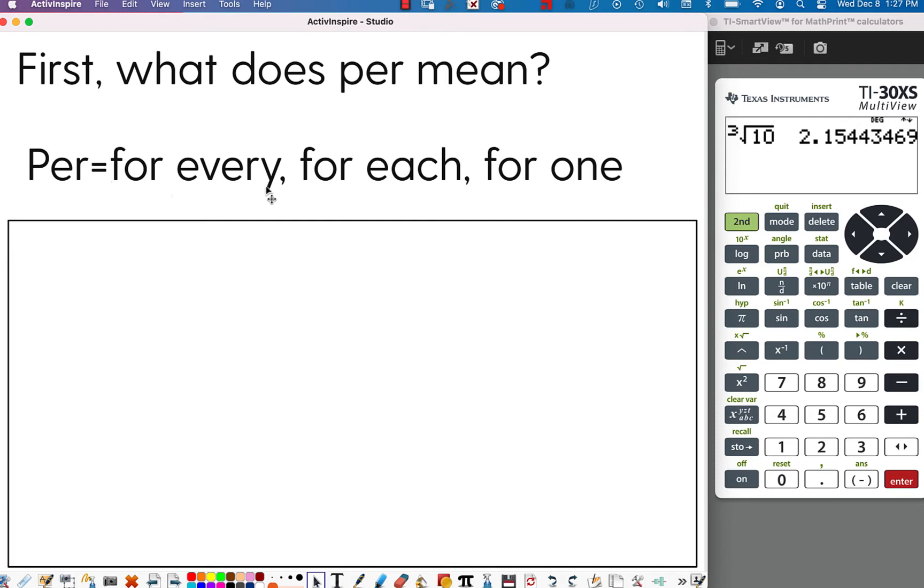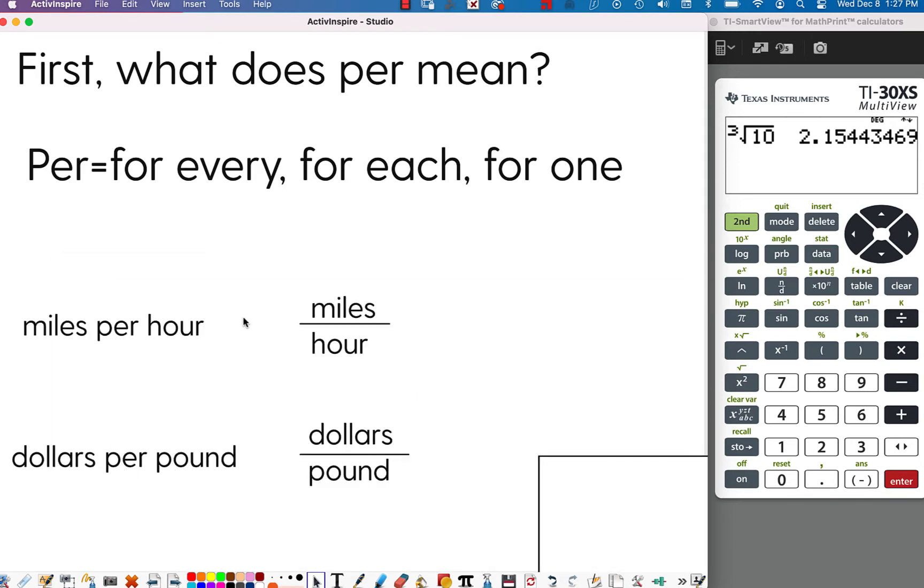Per means like for every, for each, or for one. And so if you take a common example here, miles per hour, you would use miles divided by the number of hours. Same with dollars per pound, dollars over the pound. In other words, the divided sign is the word per. And hopefully you recognize this as in like percent. Percent is per 100.